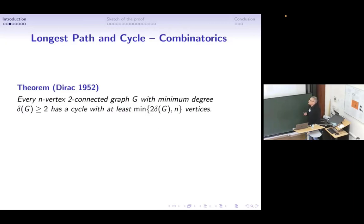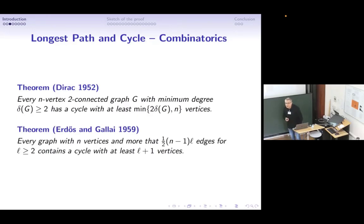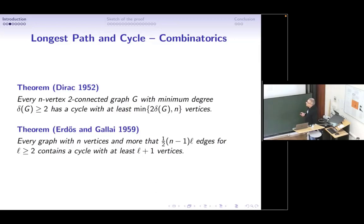Dirac proved that any two-connected graph with minimum degree at least δ has a cycle whose length is at least twice δ, if it's less than n. And there is another famous result by Ore-Shan-Galai, also obtained a very long time ago. It says that if we have sufficiently many edges — at least (1/2)(n−1)n edges — then we have a cycle with at least n+1 vertices.